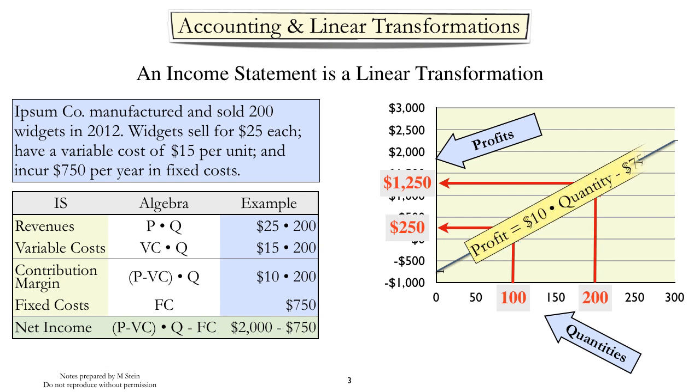In this example, that transformation would take the form of profit equals $10 times quantity minus $750. If this looks familiar, it should, because essentially it's a cost-volume profit graph.